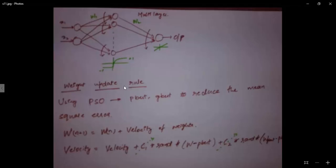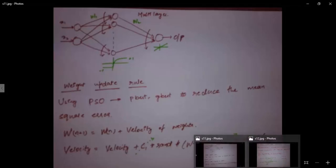We update the weights to train our perceptron using PSO. We get p-best as local best and g-best as global best of mean error. The weight update rule is: w(n+1) = w(n) + velocity. The velocity is updated as: velocity + c1·rand·(w - p-best) + c2·rand·(g-best - p-best). C1 and c2 are chosen such that their sum equals 3, which helps in proper convergence and fast output.